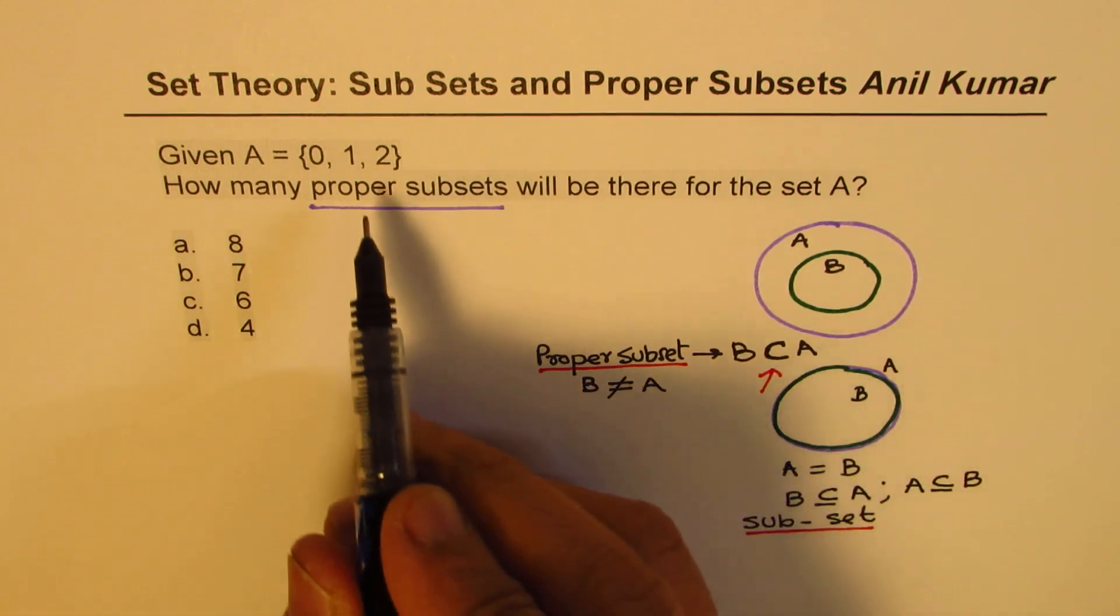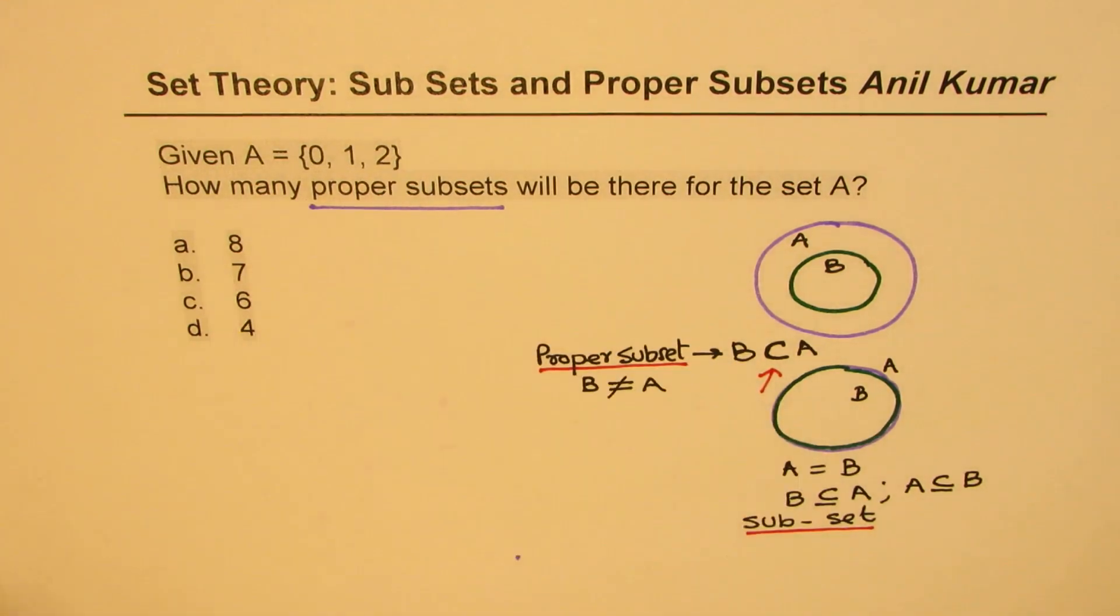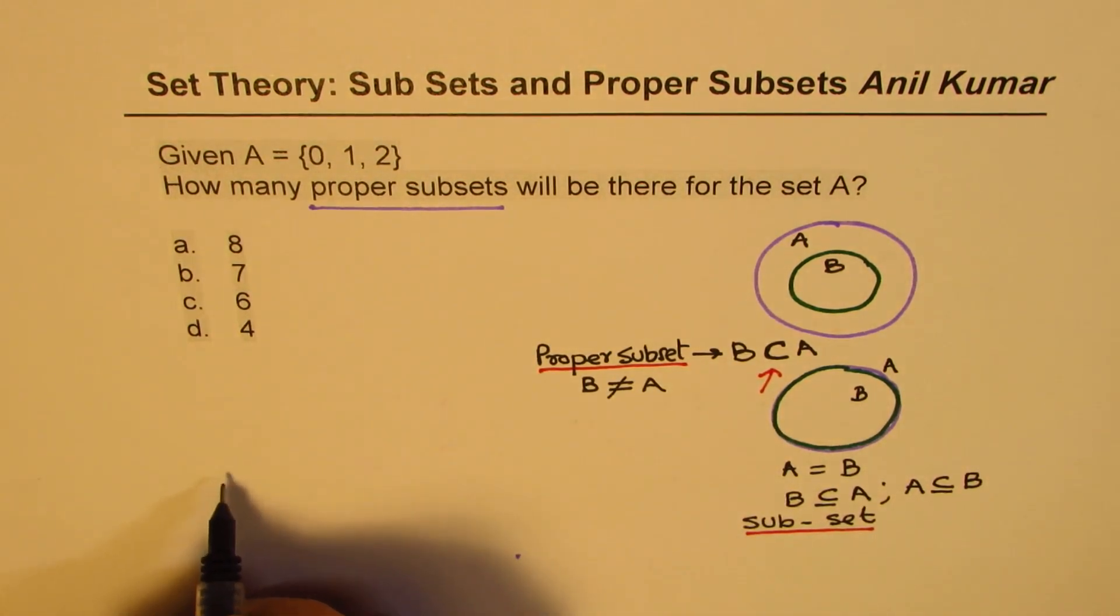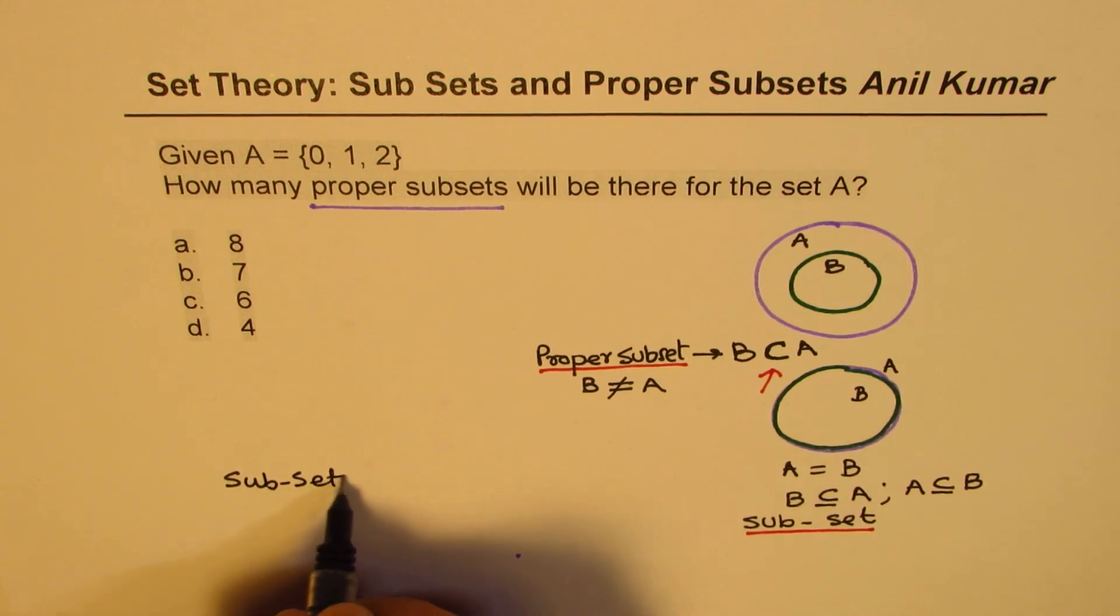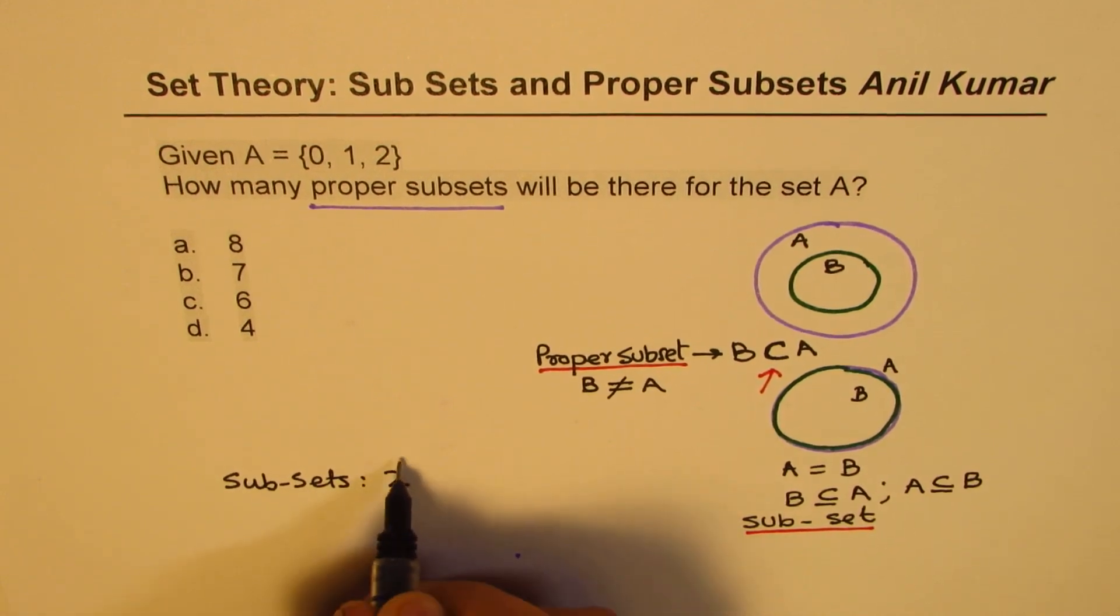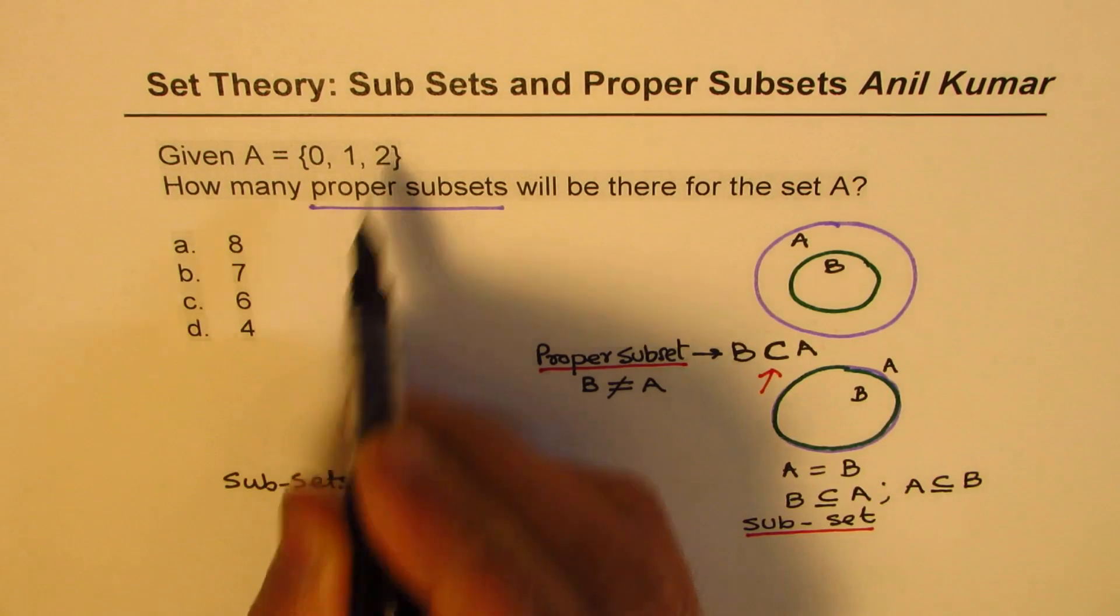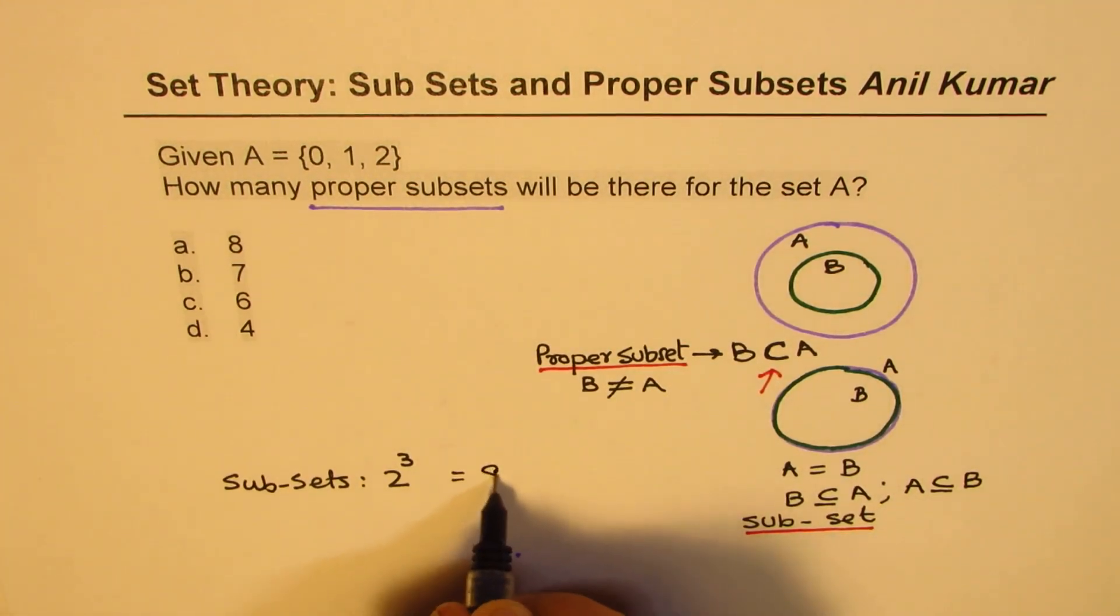So in this particular case we have in all subsets, how many subsets? Subsets will be two to the power of three since there are three elements, which is eight.